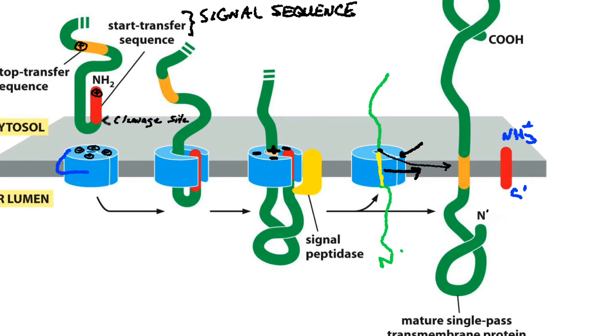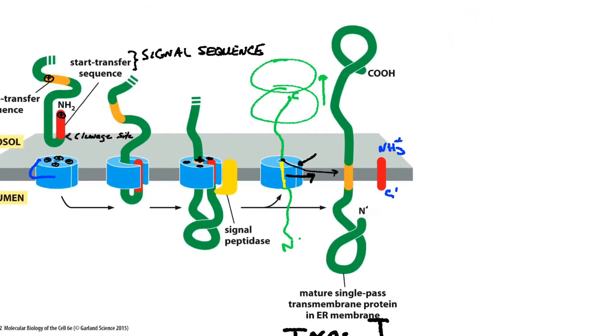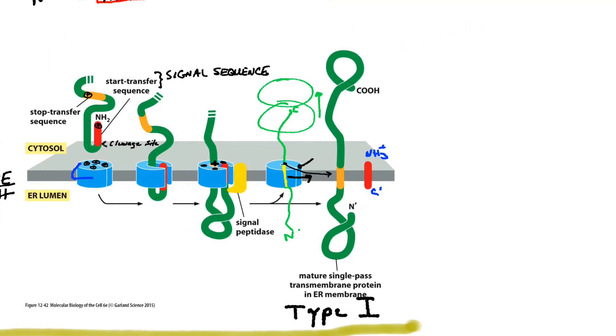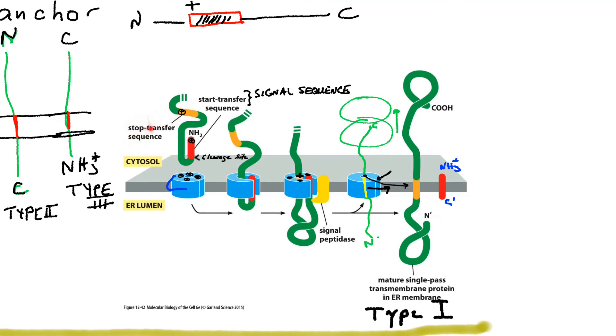If you went ahead and imagined that the ribosome is still here, then I hope you can see that it can continue to translate. And if it does, it would just be kind of pushed out into the cytoplasm, extending the now C-terminus of the nascent chain. And it can be as long as you want it. But what you end up with is a protein that looks like this. Process N-terminus, a single transmembrane helix that was once a stop-transfer sequence right here.